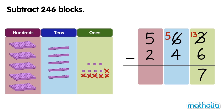Next, we subtract the tens. 5 tens minus 4 tens equals 1 ten.